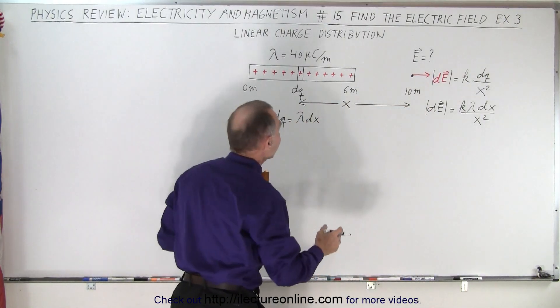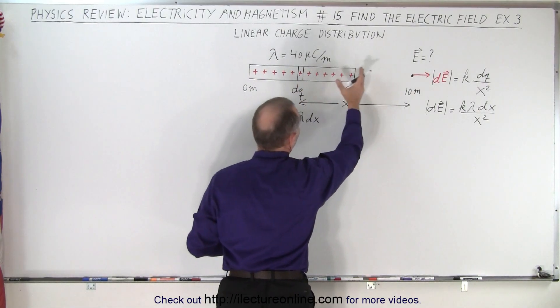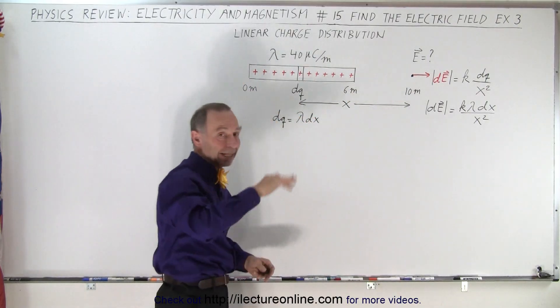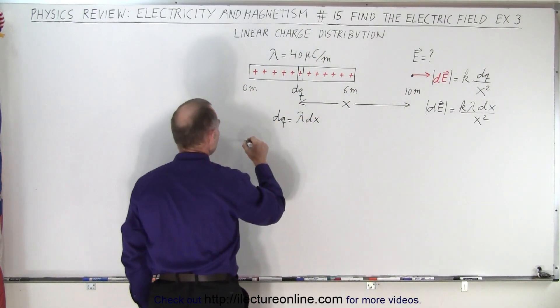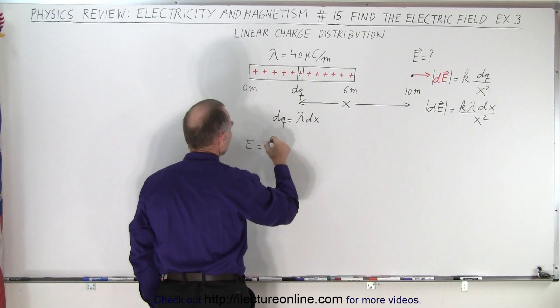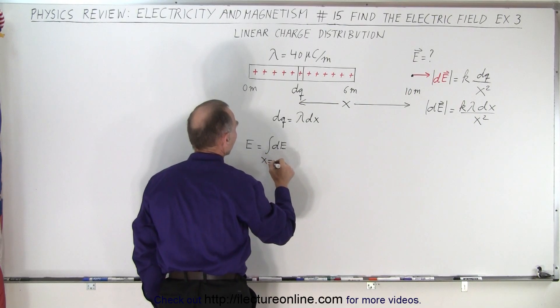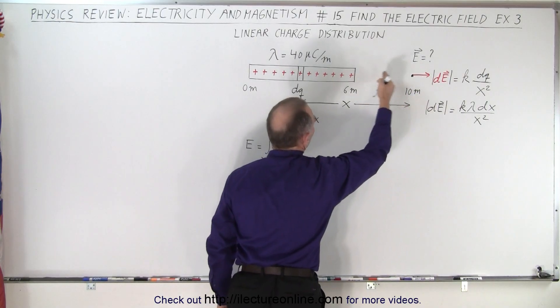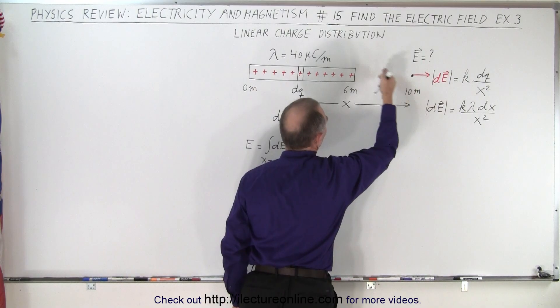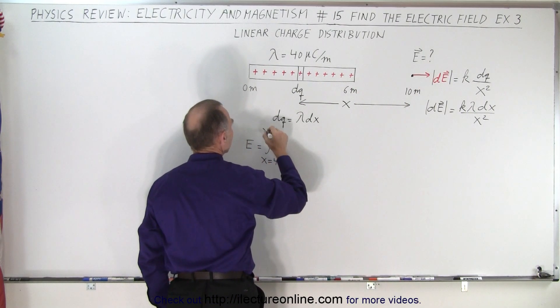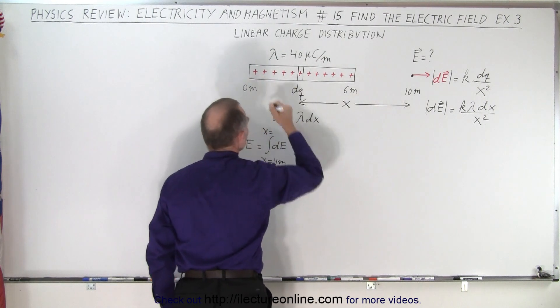Which means if we want to know the entire electric field for the entire piece right there, the entire strip with charge on it, then we're going to have to integrate over that distance. So that means that E, the magnitude of that, is going to be the integral of all the dE's, and that's going to be from x equal to... we're going to take this distance right here. We start at being at a distance of 4 meters away and we're going to end up at a distance of 10 meters away.